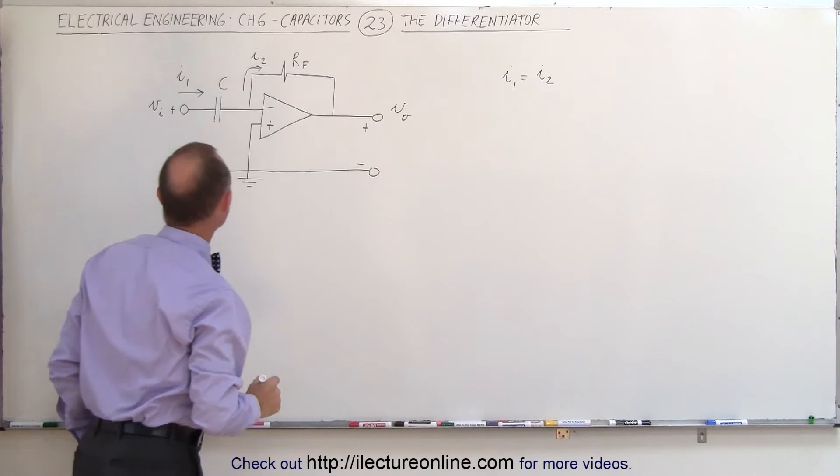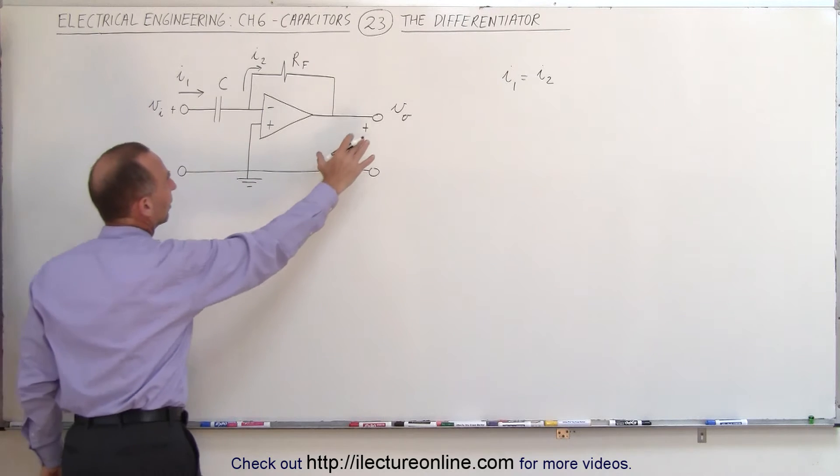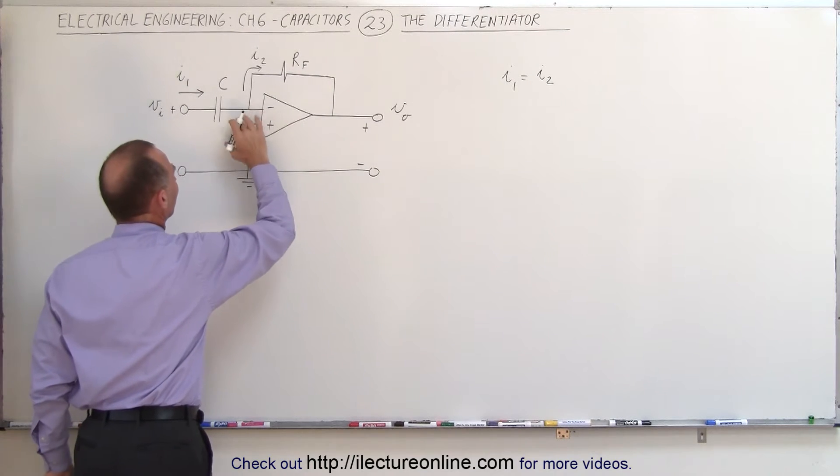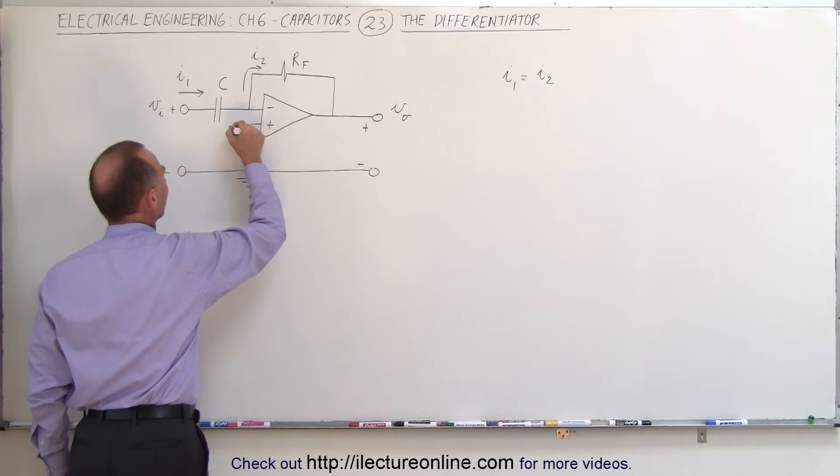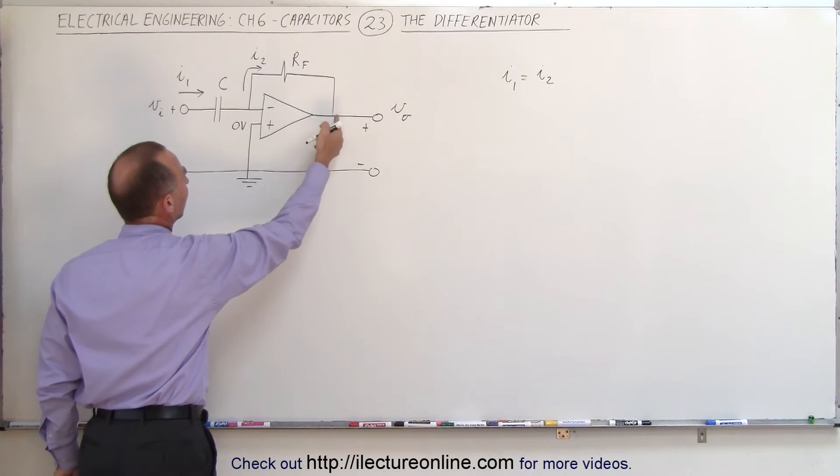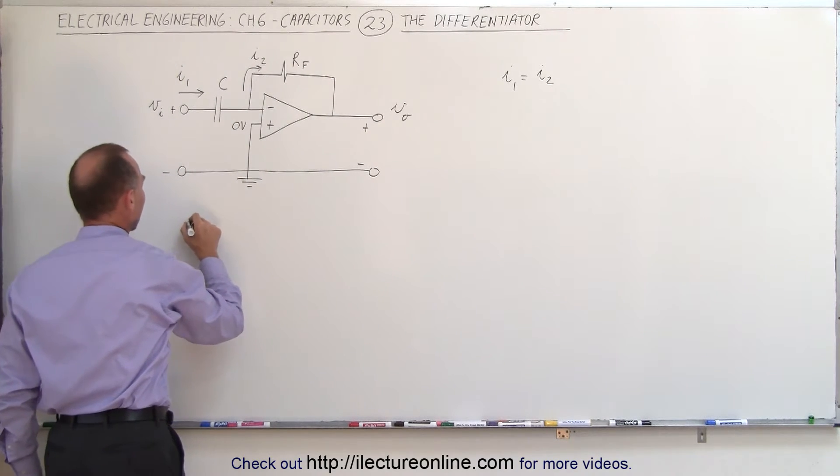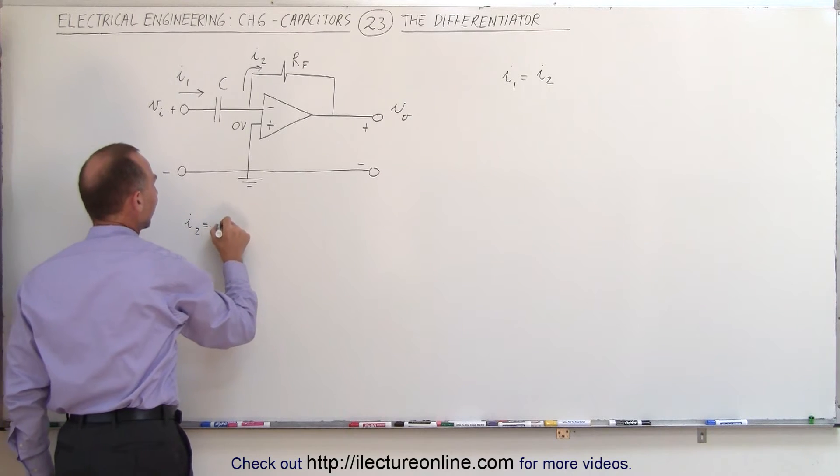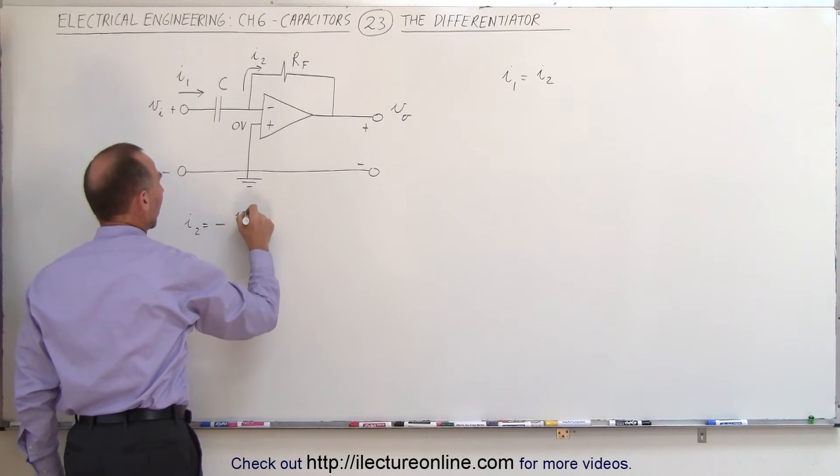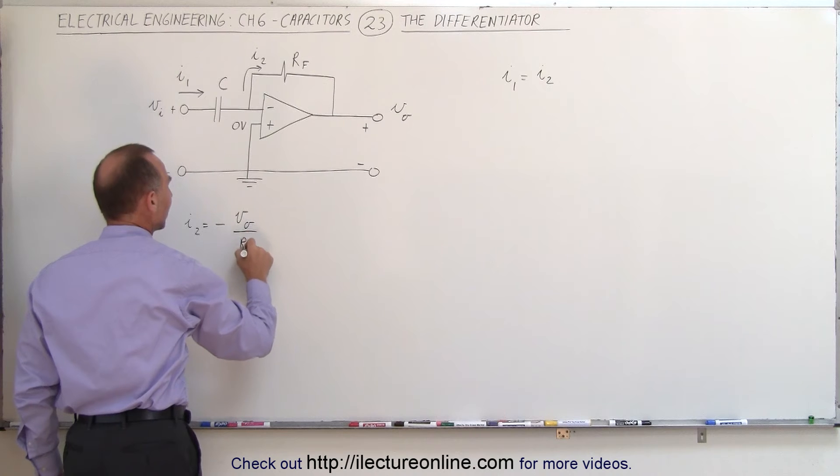And what we can say here is that if we assume that this is higher potential than this, that this is at zero potential, so the voltage here is at zero volts, we can then say that the current actually flows in the opposite direction, and therefore we can say that I2 is equal to the negative of V output divided by the feedback resistor.